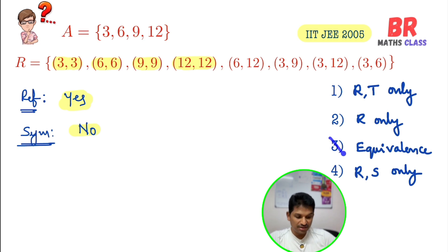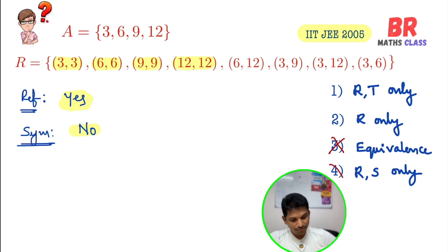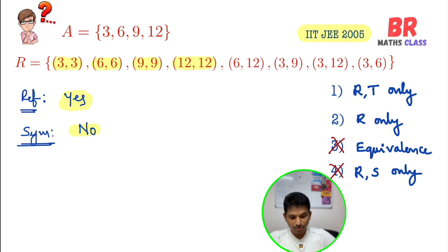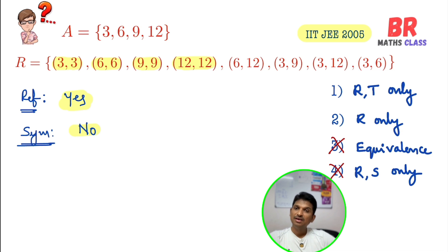So this relation is reflexive but not symmetric. We can strike off the equivalence relation option because it is not symmetric. We can also strike off the fourth option 'reflexive and symmetric only' since it is not symmetric. Now two options remain, so we must check transitivity.